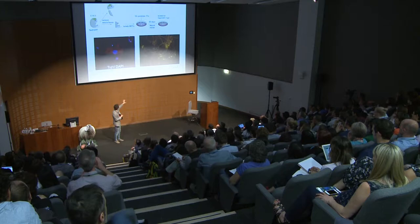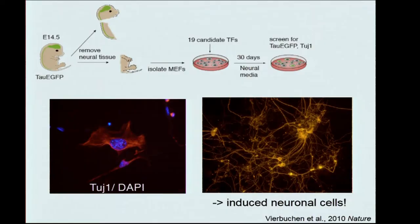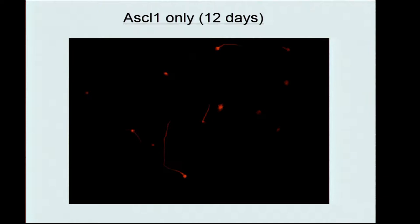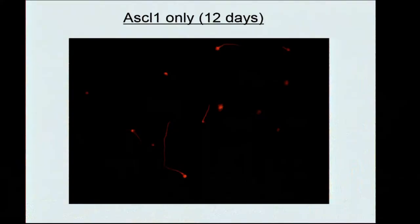These cells were very rare in the dish, so it was very inefficient. It took a while to find the key factor, partly because we never thought single factors would be able to do anything, since they had been tried one or two decades before. But we saw that one factor, ASCL1 — also a bHLH factor — was actually able to do something: alone it can induce these immature-looking neuronal cells.